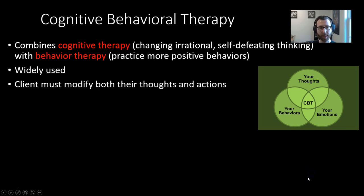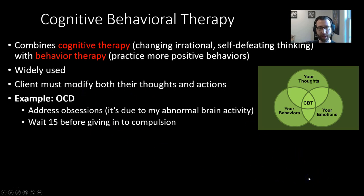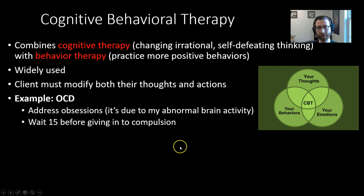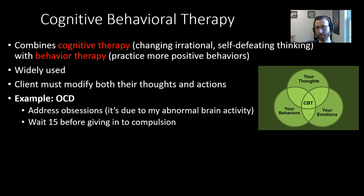CBT is widely used, and the client is required to modify both their thoughts and their actions. For example, in a patient with OCD, you might address the obsessions as the cognitive component — helping the client understand that these thoughts are due to abnormal brain activity. For the behavioral modification, you might ask the client to wait 15 minutes before giving in to the compulsion, delaying the behavior as a way to help them cope.